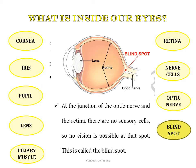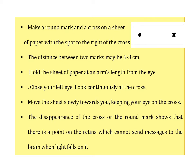To demonstrate the blind spot: make a round mark and a cross on a sheet of paper about 6 to 8 cm apart. Hold the sheet at arm's length, close your left eye, and look at the cross mark. Move the sheet slowly towards you while keeping your eyes on the cross — the round mark disappears at some point. This shows that there is a point on the retina which cannot send messages to the brain when light falls on it, confirming that the blind spot is a point where no image is formed.